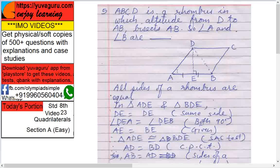Rhombus means what? All sides are equal, diagonals bisect each other at 90 degrees. Always remember these basics. Now what is next? Given the altitude from D bisects AB in half, so AE equals to EB. This is the altitude and these two are half of AB, right? So AE equals to EB.